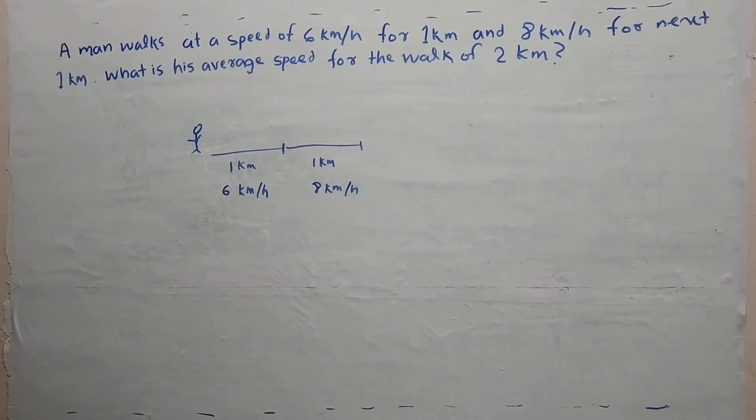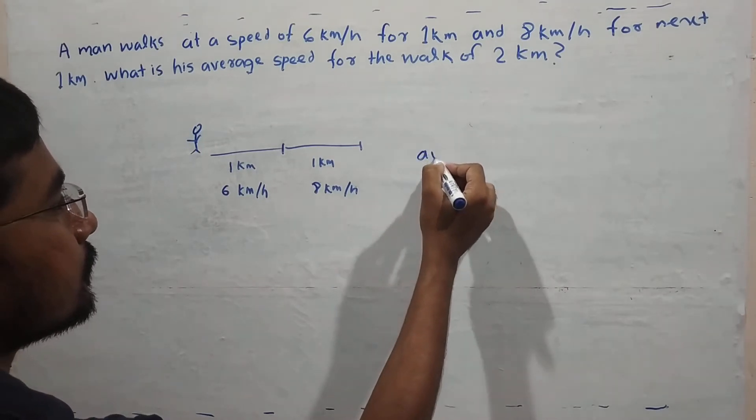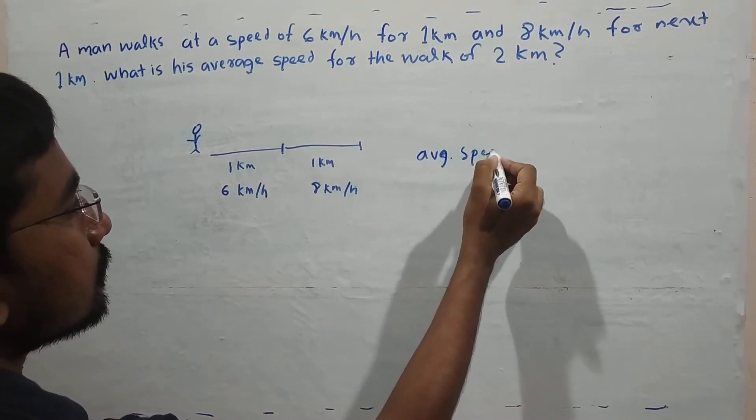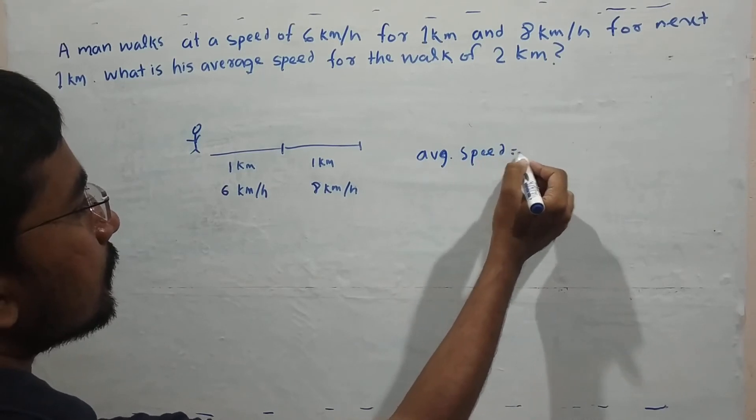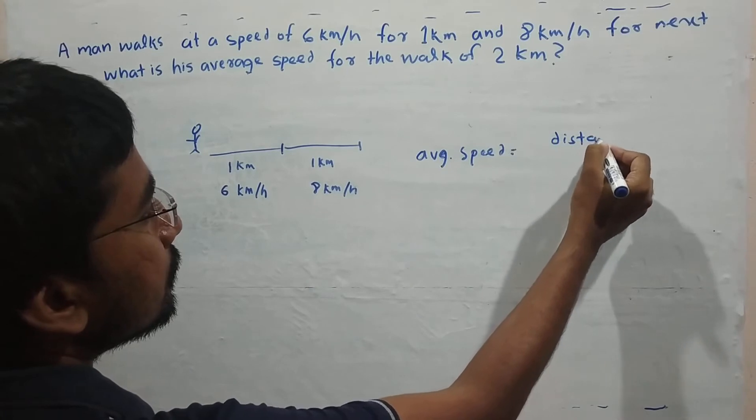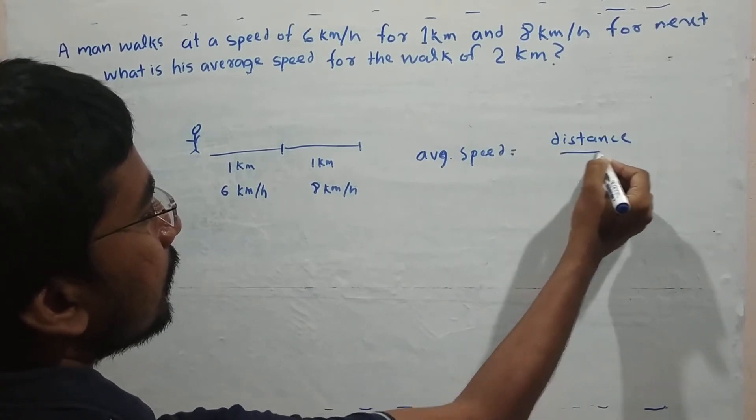First step: what is average speed? Speed equals total distance divided by total time.